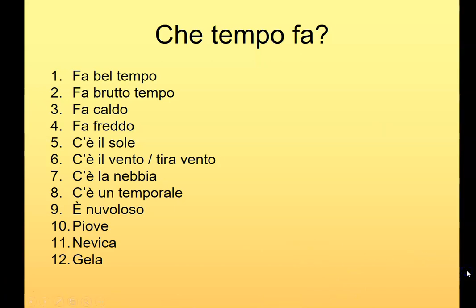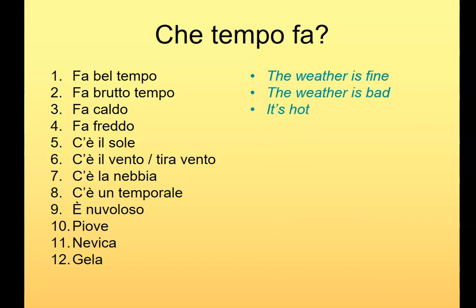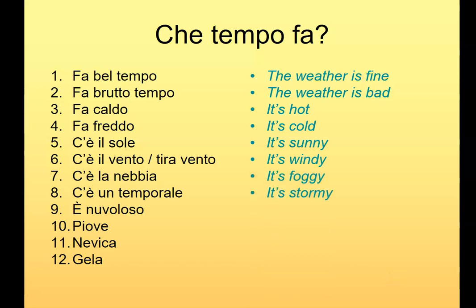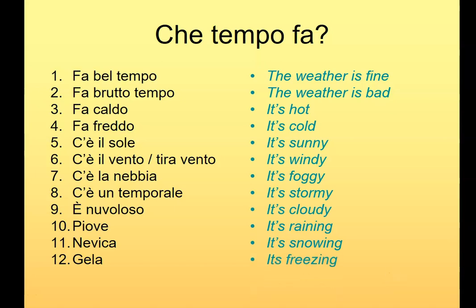Vediamo le risposte. Fa bel tempo — the weather's fine, nice, or beautiful. Fa brutto tempo — bad or awful weather. Then hot and cold: caldo means hot — it's a false friend, it doesn't mean cold. Then it's sunny, windy, foggy, stormy, cloudy, raining, snowy, and finally giella — it's freezing.